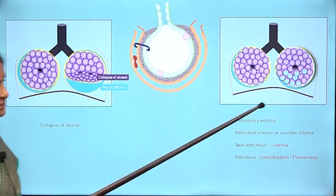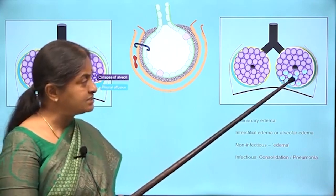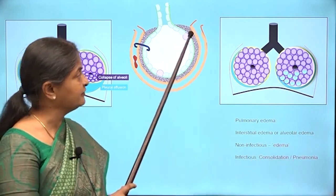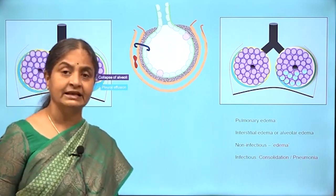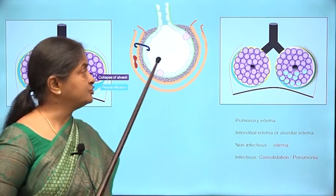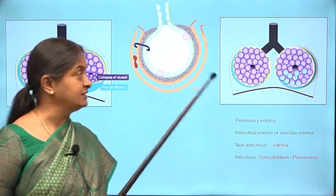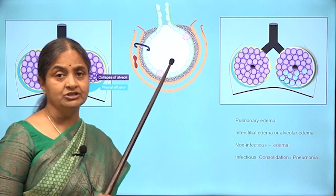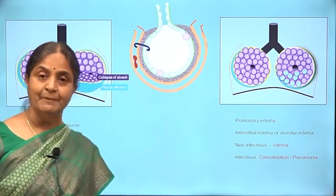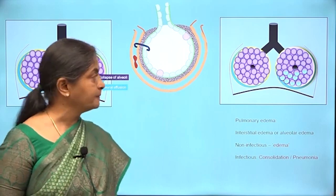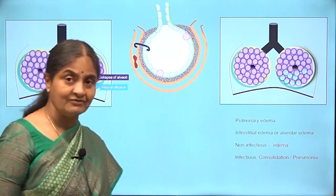Pulmonary edema is a condition where there is fluid within the alveoli — called alveolar edema — and if the fluid collects in the interstitial spaces it is called interstitial edema. In non-infectious cases like left heart failure, we call it alveolar edema. But if the fluid is due to inflammation from bacterial or viral infection, we call it pneumonia. Pneumonic consolidation is a term used to describe fluid in the alveoli due to a bacterial infection. In these conditions the fluid increases the distance through which gases have to travel, so it amounts to thickening of the respiratory membrane.